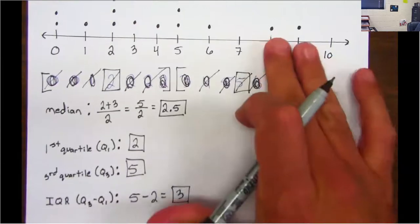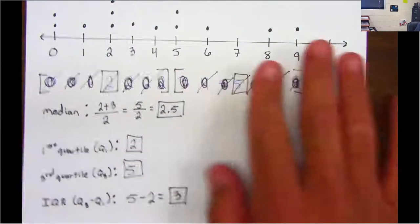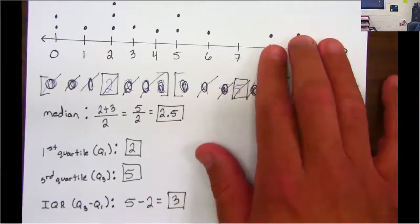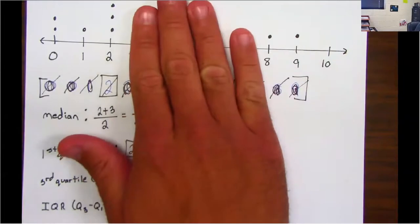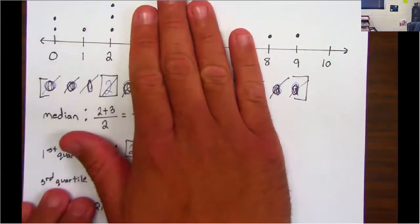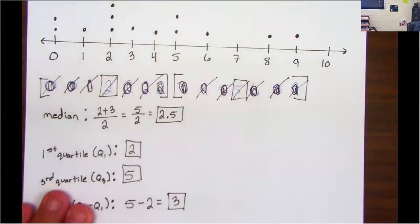Now someone asked earlier, what about eight and nine, they're clustered together? A cluster, guys, you have to have at least three consecutive numbers with information on it. For example, if you just had zero, one, and two, that could be a cluster. But if you only had those two numbers, zero and one, and then you had a gap, that's not a cluster.